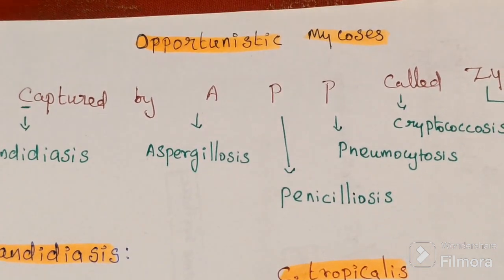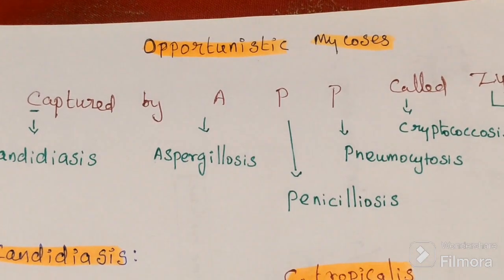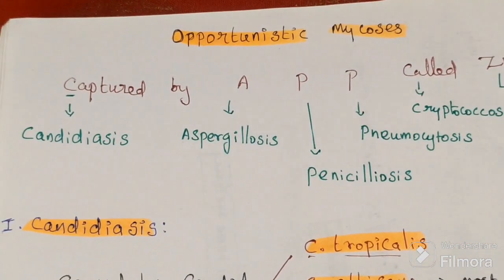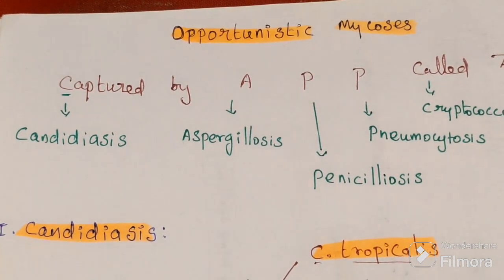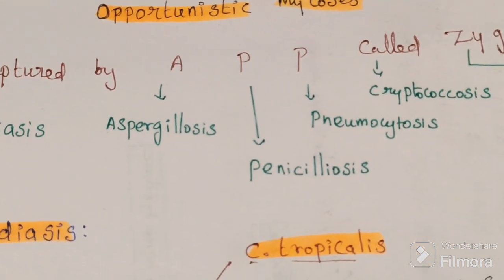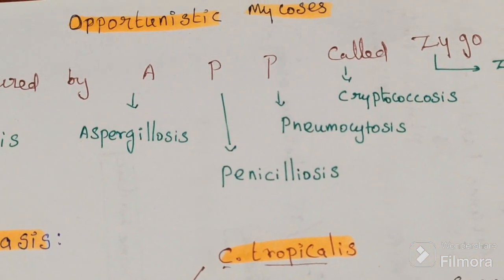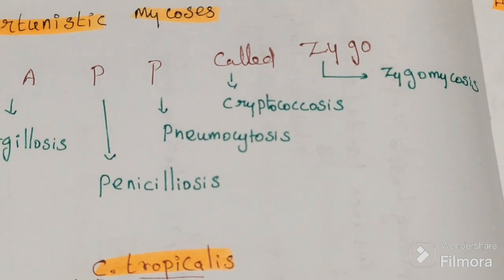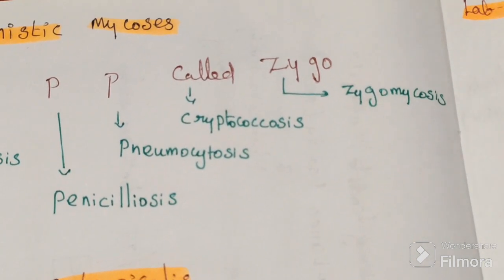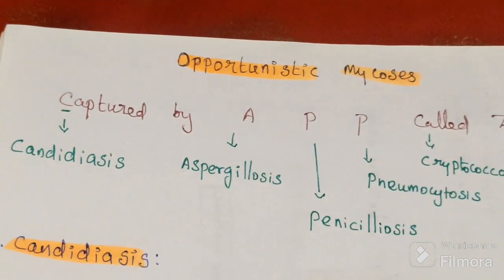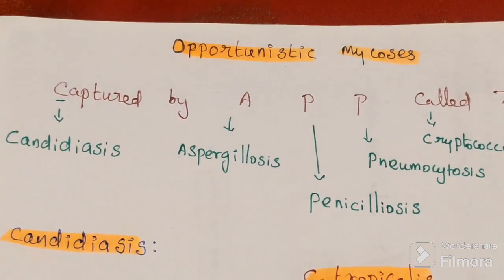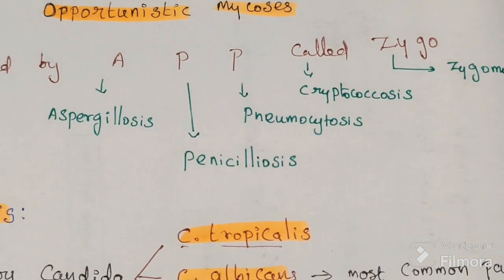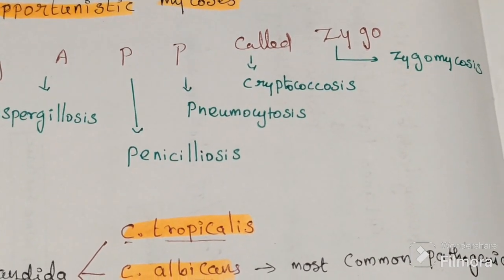In this video, we will discuss opportunistic mycosis examples using the mnemonic CAPPCZ, captured by an app called Zygo. C stands for candidiasis, A for aspergillosis, P for penicilliosis, P for pneumocystosis, C for cryptococcosis, and Z for zygomycosis. These are the examples of opportunistic fungi.